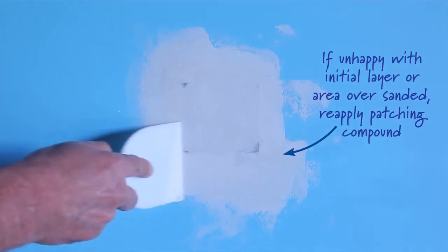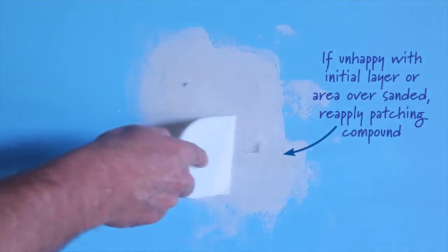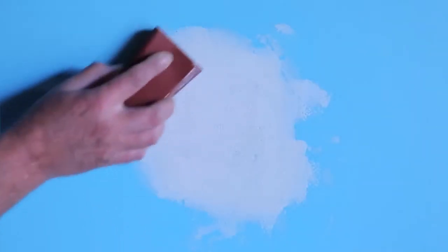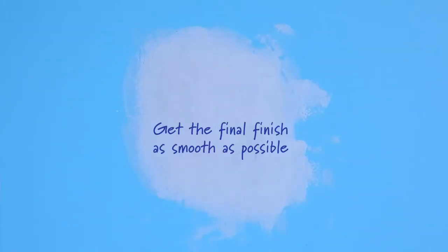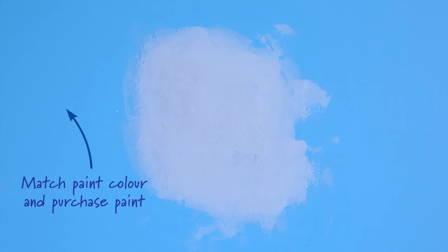If you're not happy with the initial layer of patching compound or have perhaps over-sanded the area, apply more patching compound and sand again once dry in preparation for painting. While paint will mask the patching compound applied, the final finish will only be as good as the prep work. It's recommended you allow one day before painting. Once you've matched the paint color and purchased the right amount of paint, be sure to clean the wall using a damp cloth.